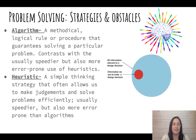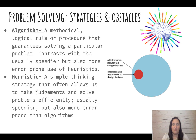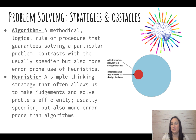There are two different strategies we use to problem-solve. The first is called an algorithm - a methodical, logical method that guarantees a solution to the problem, but it can take some time. For example, if you're looking for a can of beans in the grocery store, the algorithm method would have you go down each aisle starting with the first until you find the beans. You will definitely find them, but it's probably not the fastest way.